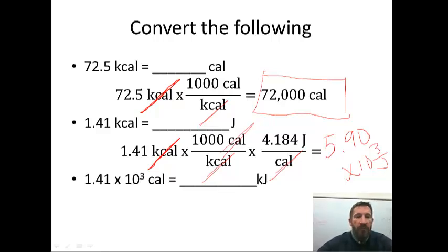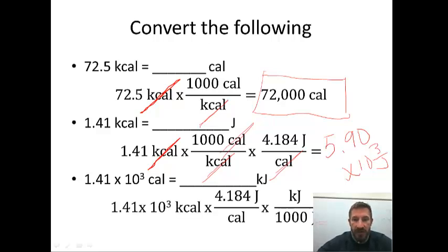Let's do one more. 1.41 times 10 to the third calories to kilojoules. This will be almost the opposite of what we just did. We want to first change calories to joules. And then we want to change joules to kilojoules. And remember, there are 1,000 joules in a kilojoule. So we have 1.41 times 10 to the third calories. The calories cancel. And now we have joules. And your joules cancel. To put this in your calculator, 141 times 4.184 divided by 1,000. And when you do this, the answer is 5.90 kilojoules. Those are how you do these conversions.